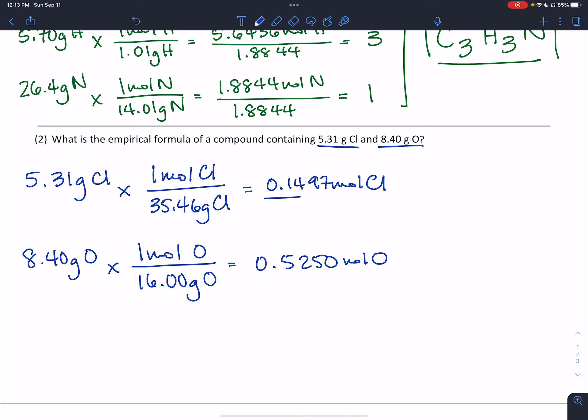I've done mass to moles. Now divide by smallest. The smallest is chlorine at 0.1497, giving one atom of chlorine. Dividing oxygen by this gives 3.5. I need to multiply until whole. I can't have 3.5 atoms of oxygen. Multiply by 2 to get rid of the half, giving 7 for oxygen. Do the same to chlorine to get 2. Now I have two whole numbers, so my formula is Cl2O7.